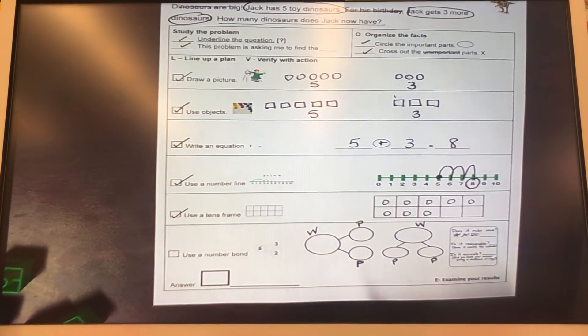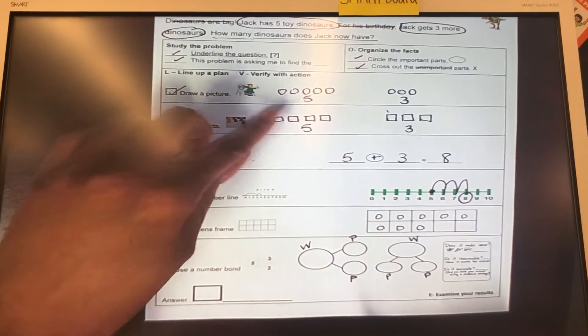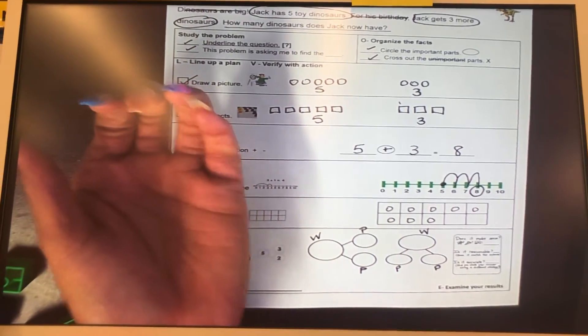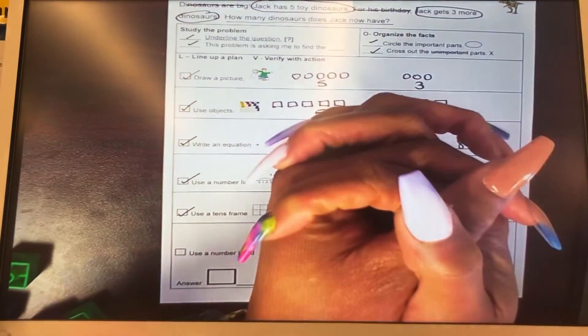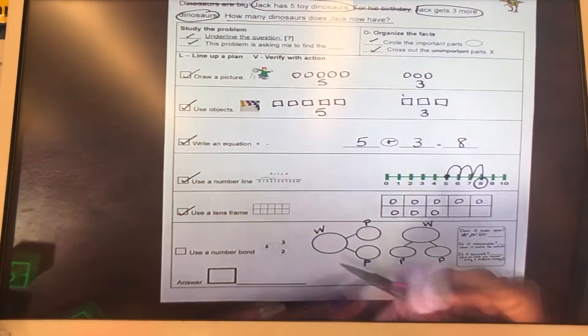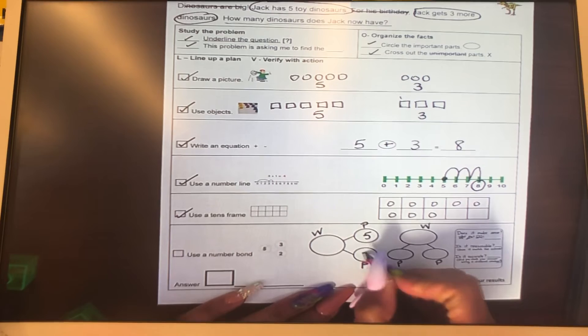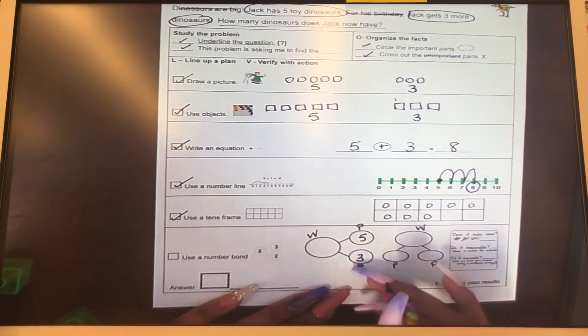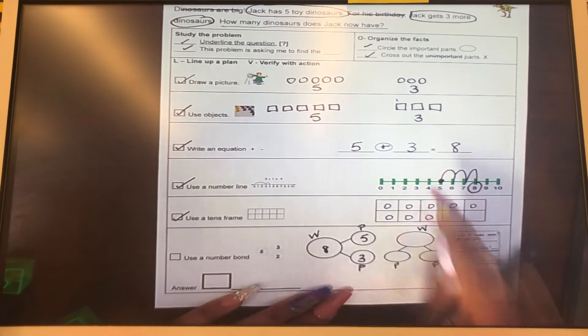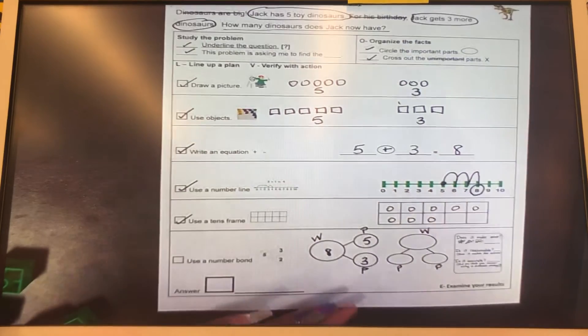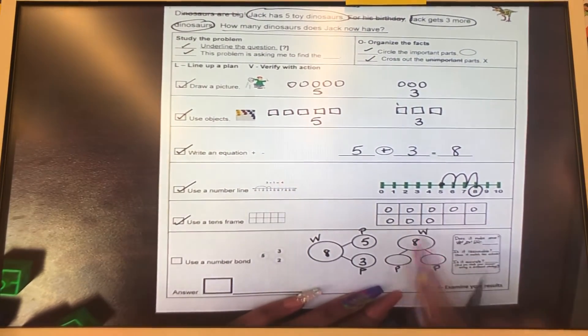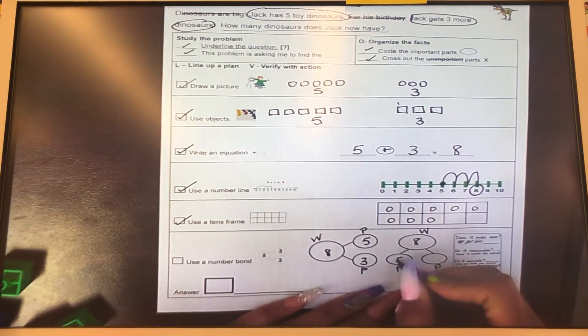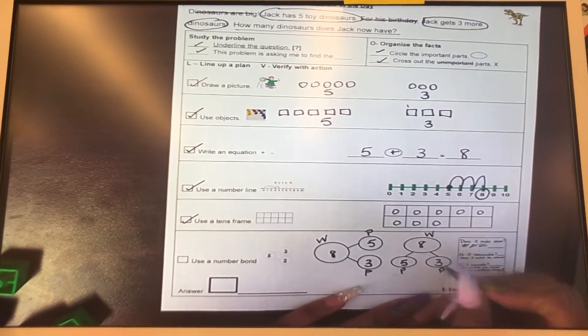So remember, Jack had five. That's five. And then he had three more. And when we put together, we get the whole. So we have five, three, and then we put together, we got eight, just like our equation says. So the whole, we know it's eight. And the parts are five and three when we put them together. Put a check.